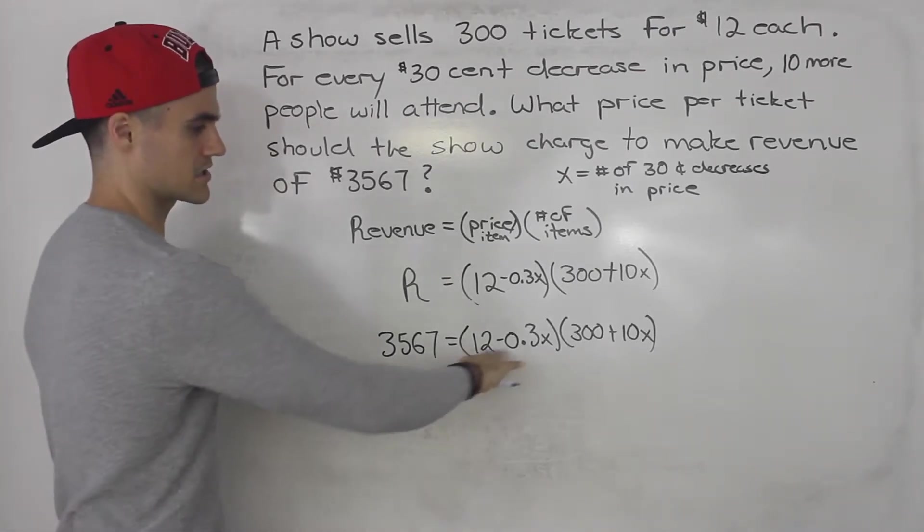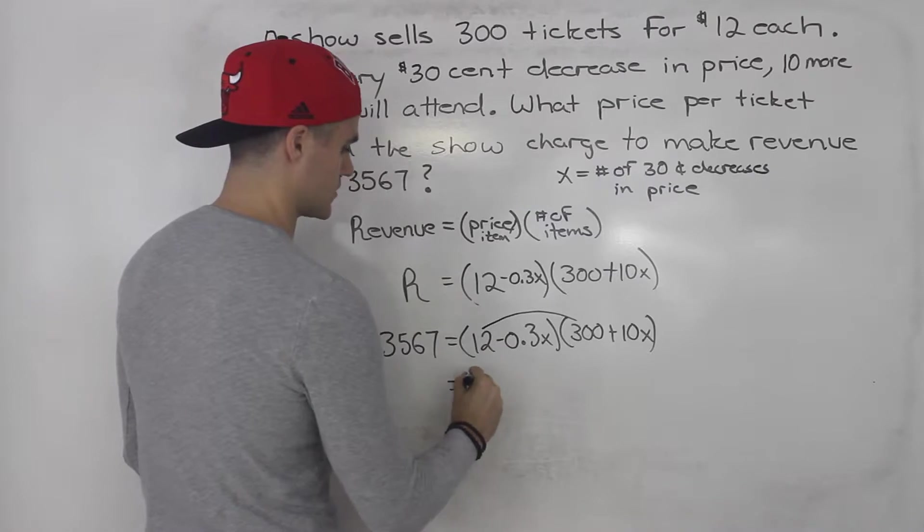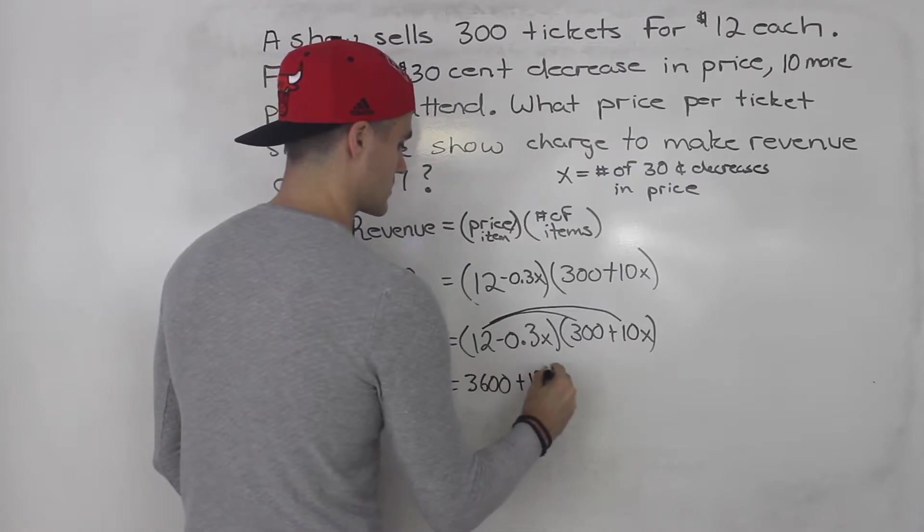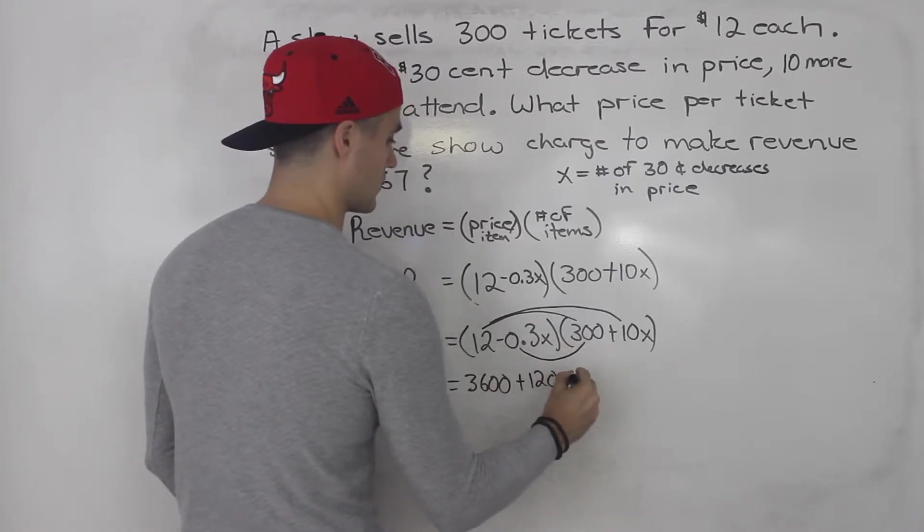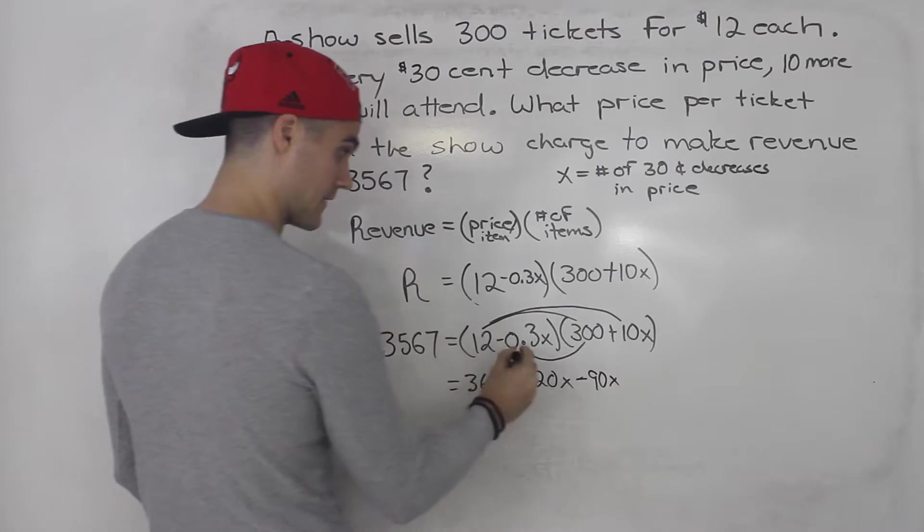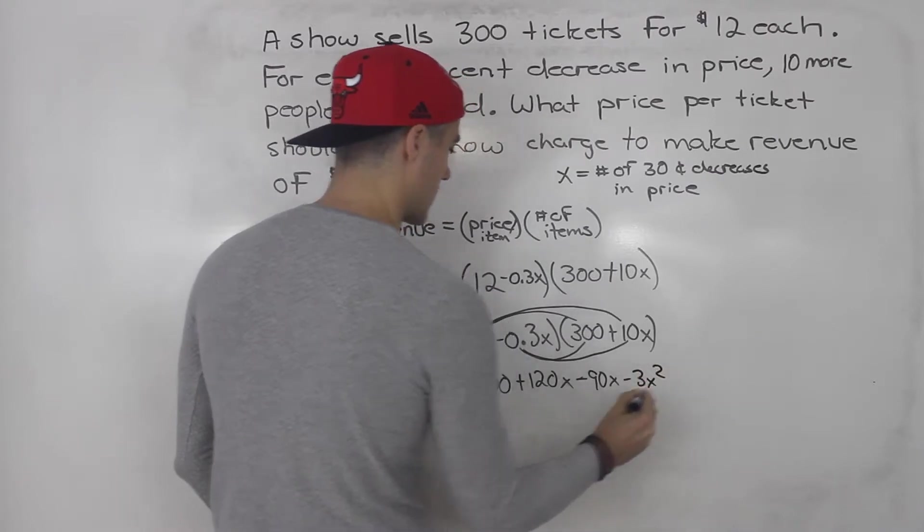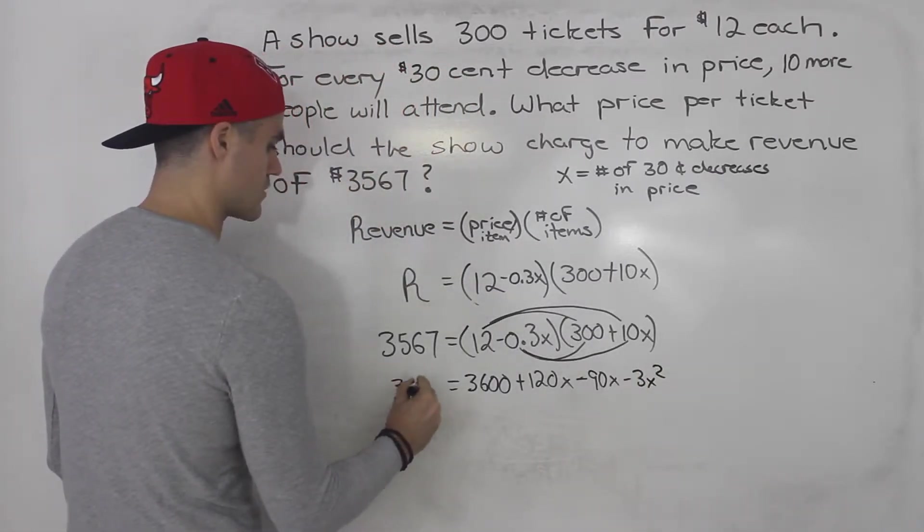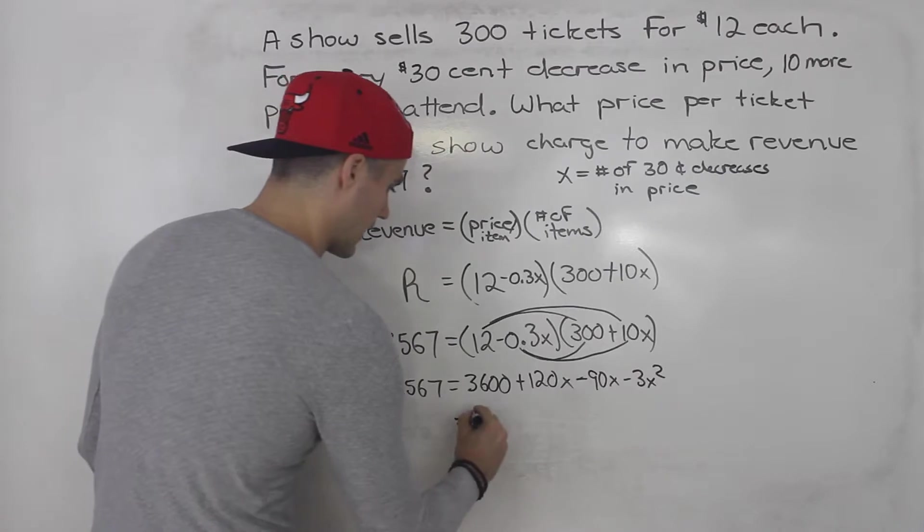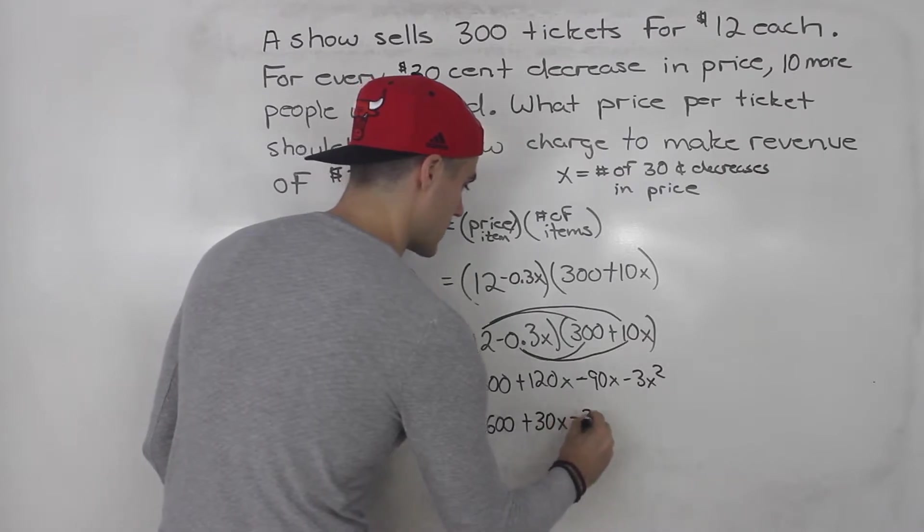So to solve this now, we're just simply going to expand this and bring this over. So we'll have 12 times 300, which is 3,600. 12 times 10x gives us 120x. Negative 0.3x times 300 gives us negative 90x. And negative 0.3x times 10x gives us negative 3x squared.